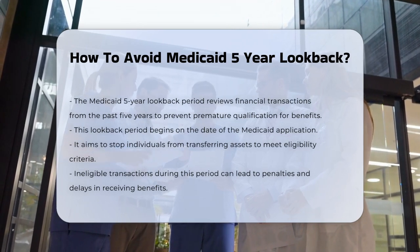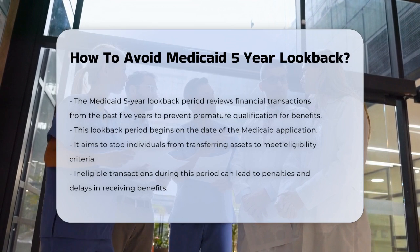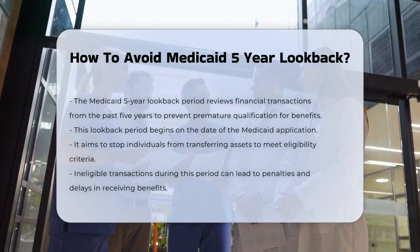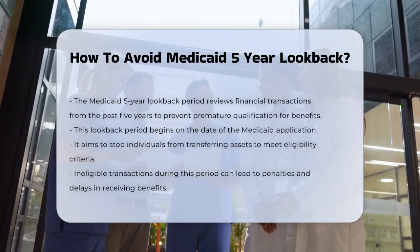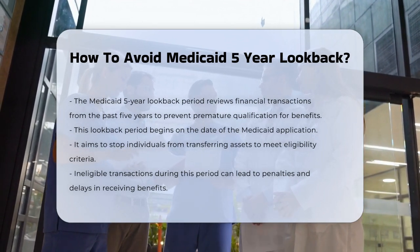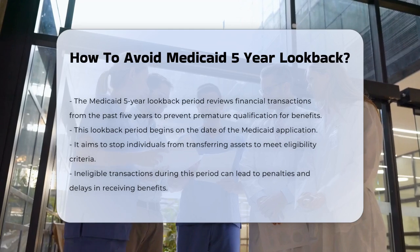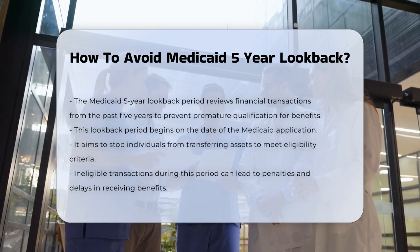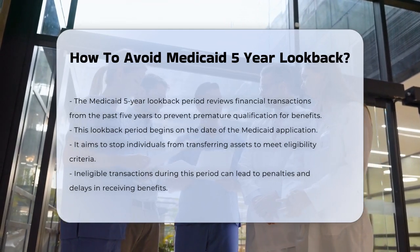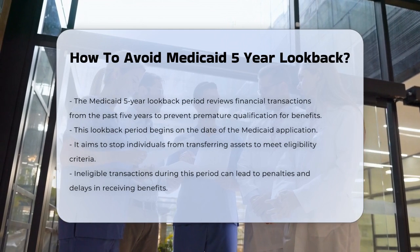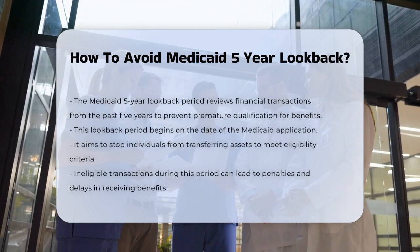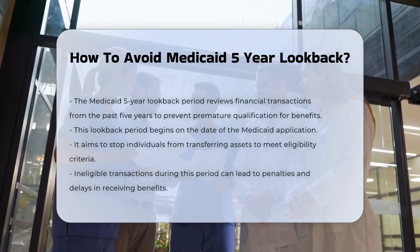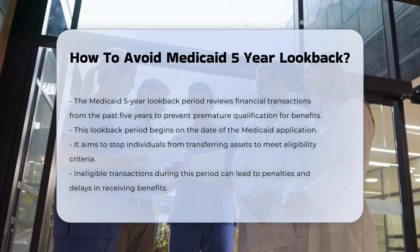What is the Medicaid five-year look-back? The Medicaid five-year look-back period is a review of an applicant's financial transactions over the past five years — or 2.5 years in California — to ensure that no assets were transferred or gifted to qualify for Medicaid prematurely. This period starts from the date of the Medicaid application.